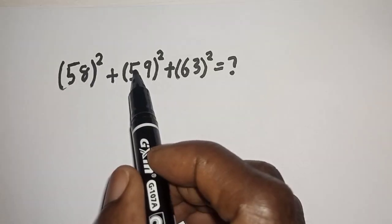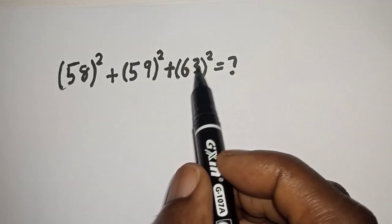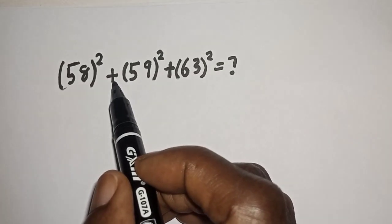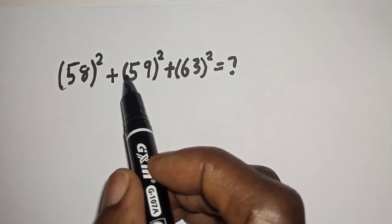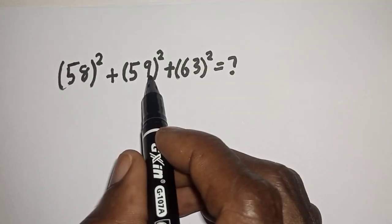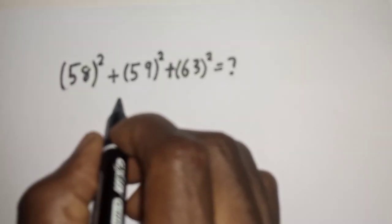58 square plus 59 all square plus 63 square is equal to what? Hi everyone, welcome to my class. In this class we want to simplify this nice square root problem using a nice trick. But before we proceed, please don't forget to like, share, comment and subscribe. Solution.